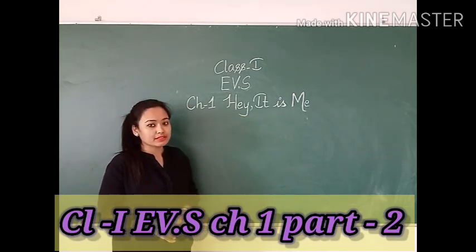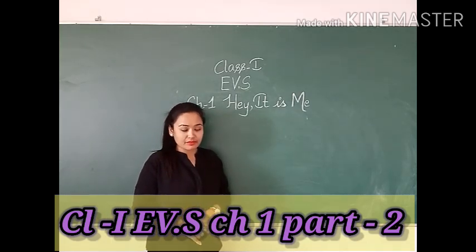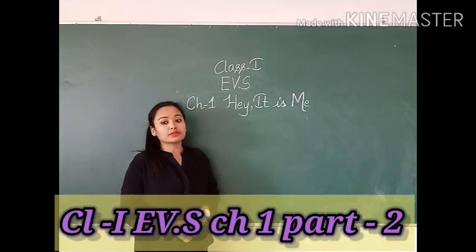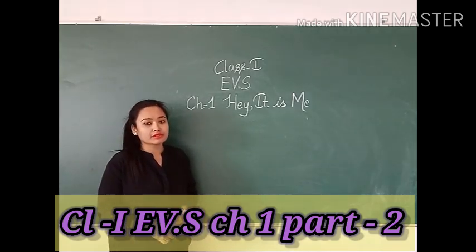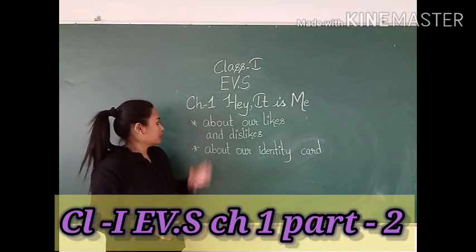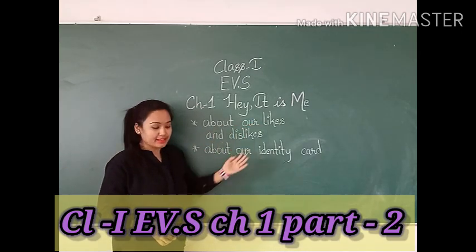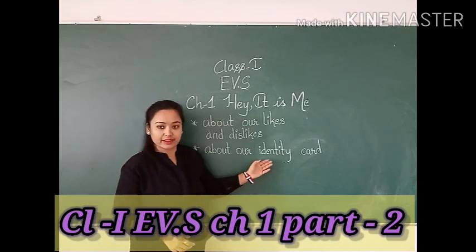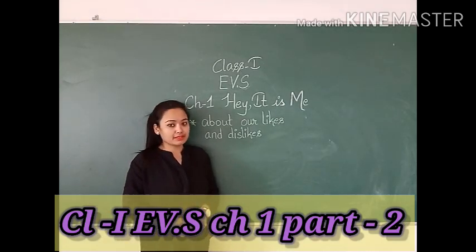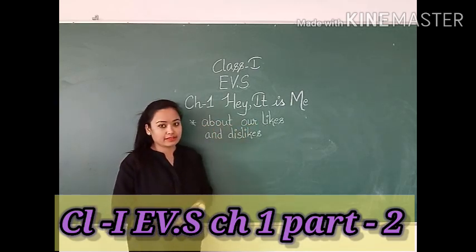We have already discussed two points — that was about ourselves and introducing ourselves to others. Today we are going to discuss the next two topics, that is about our likes and dislikes and about our identity card.